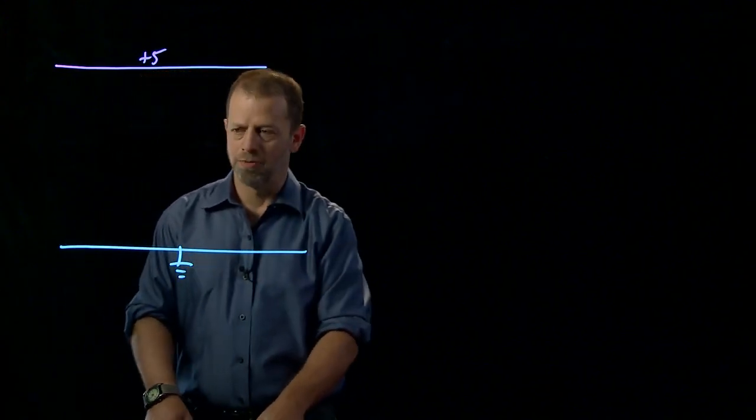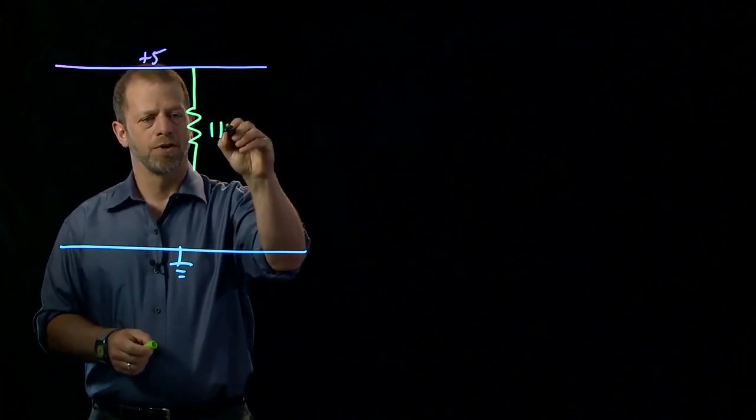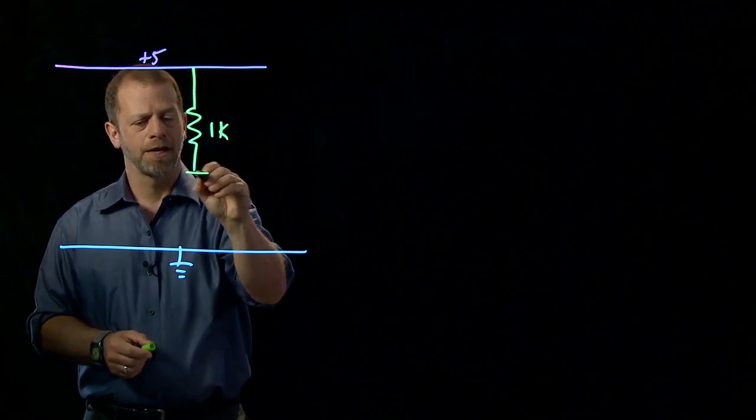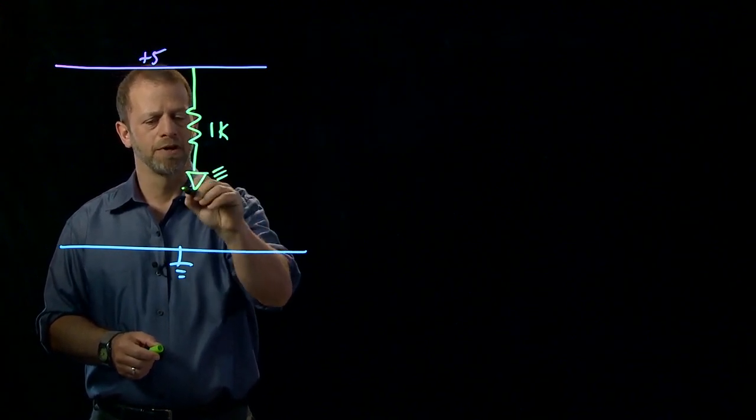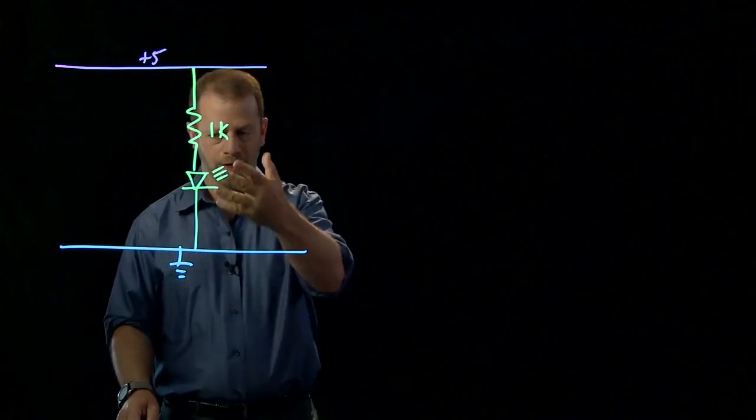And my circuit here is going to be a very simple one. Simply a resistor, maybe it's a 1000 ohm resistor, and an LED, a light emitting diode, to ground. And we're going to hope that when we build that circuit, it will actually light up the LED.